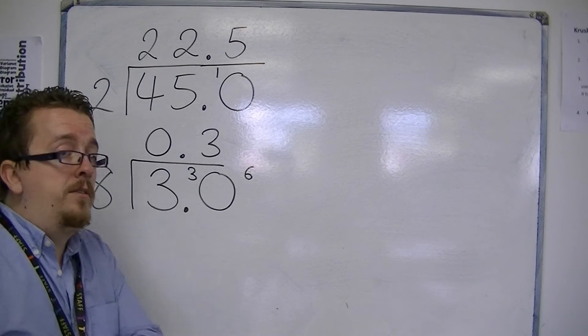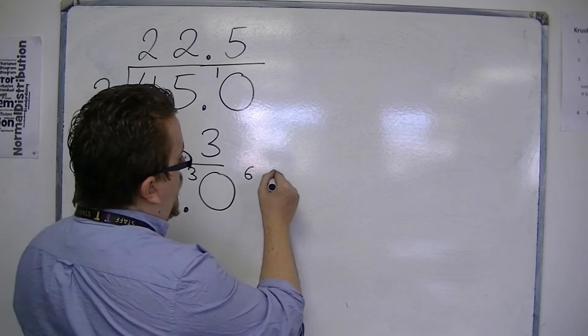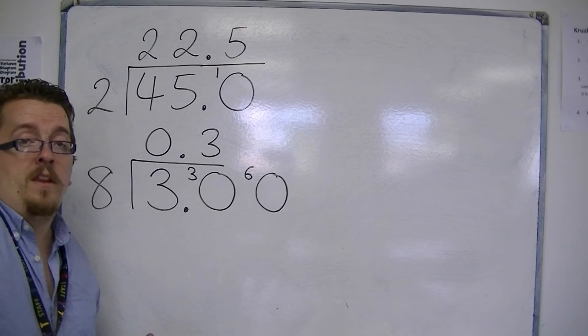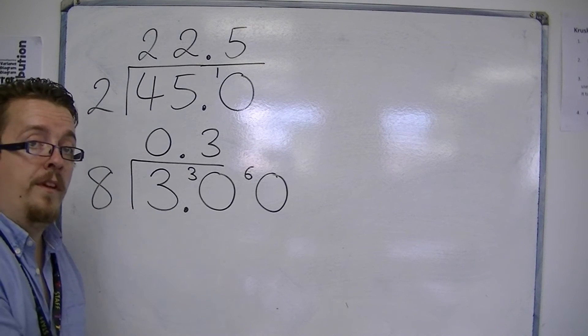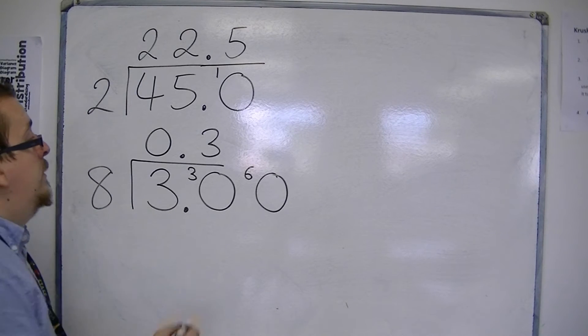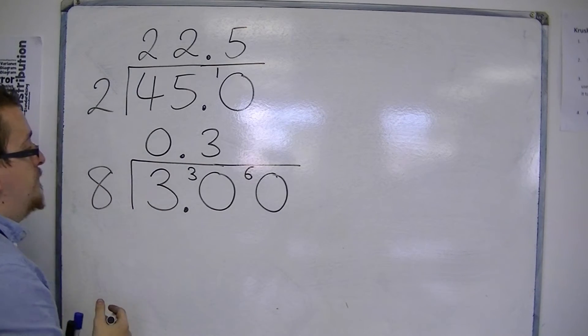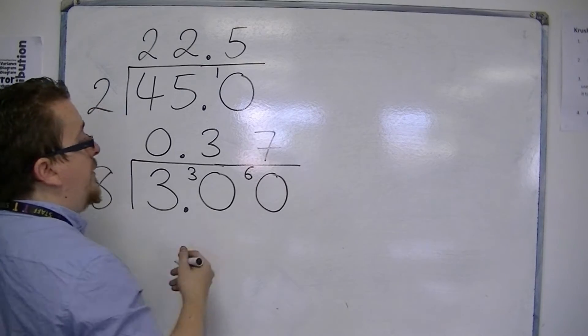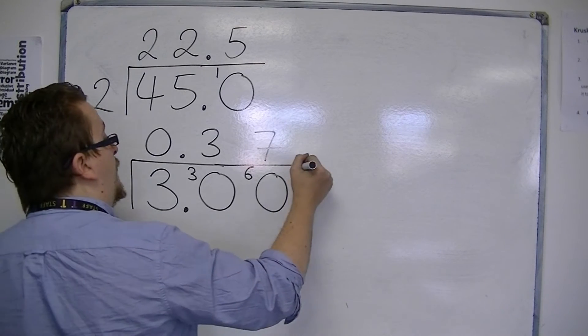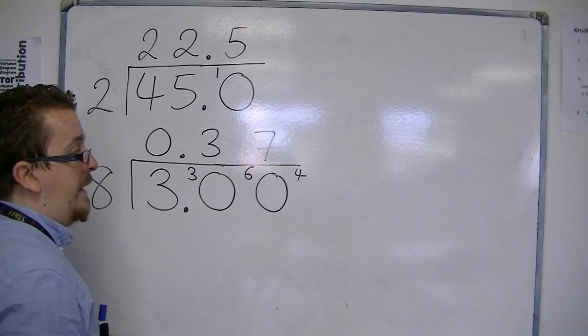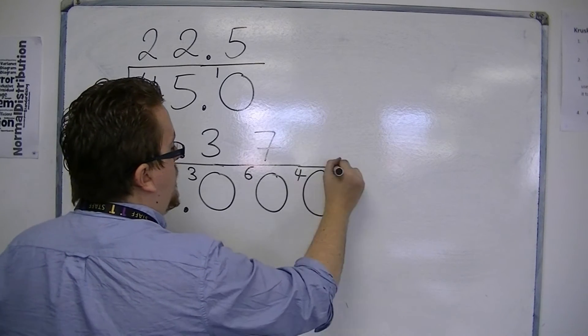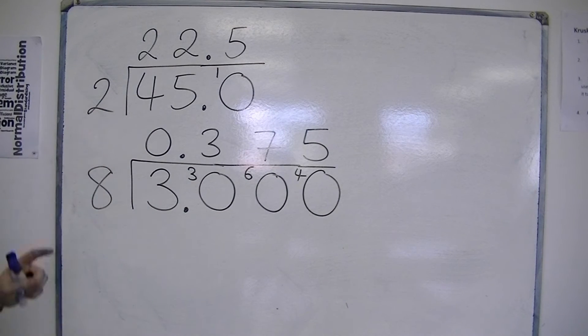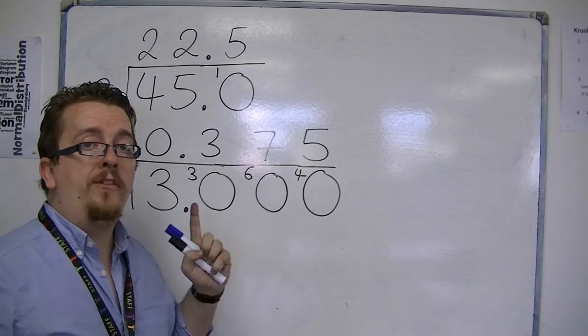We've got this another 6 now. We put in another 0. We don't put in another decimal point because it doesn't make sense to have a number as 0.3 point something. We've already got the decimal point, so all we do is put in a 0. 8s into 60 go 7. 7 8s of 56, so there's 4 left over. So we've got another number hanging. Put in another 0. 8s into 40 go 5. So 3 divided by 8 is 0.375.